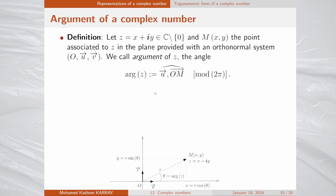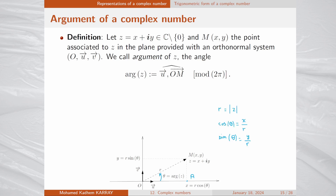Another representation of a complex number is called the trigonometric form. Let z = x + iy be a complex number and M the associated point in an orthonormal system (O, u, v). We call the argument of z the angle between vector u and vector OM, denoted θ and also written arg(z).